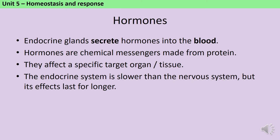The endocrine system secretes hormones into the blood. These hormones are chemical messengers made from protein that each affect a specific target organ or tissue. The endocrine system works more slowly than the nervous system, but its effects last for longer, so it's perfectly placed to control things like sexual maturity, the menstrual cycle and pregnancy.